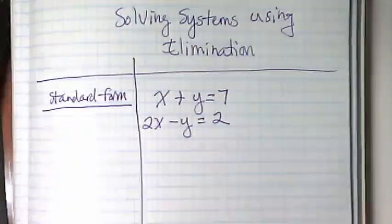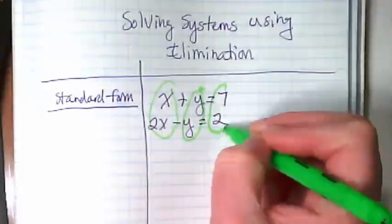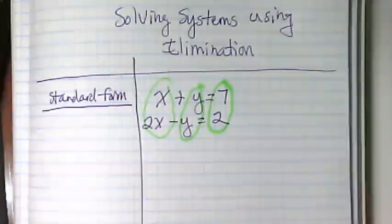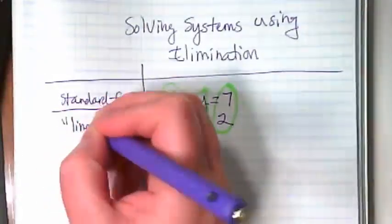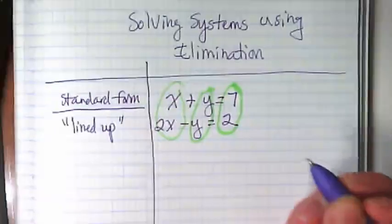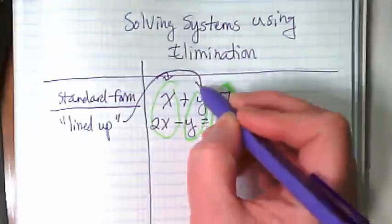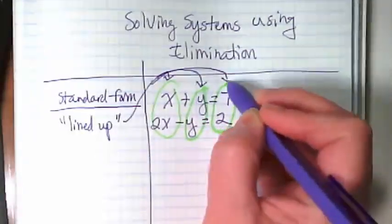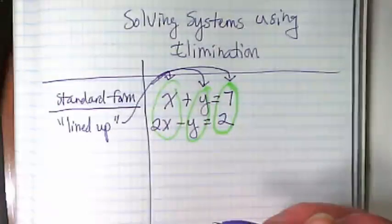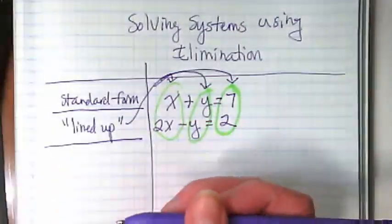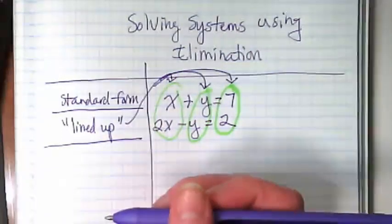The second thing I want you to notice is I have the like terms lined up. Do you see that there? I do tend to reference this as lined up. And this is what I mean by it. The X terms are here, the Y terms are here, and the constants, or just the numbers alone, are over here.